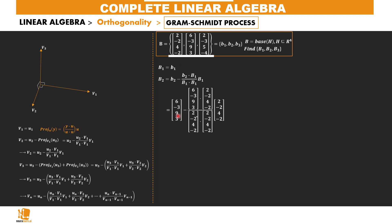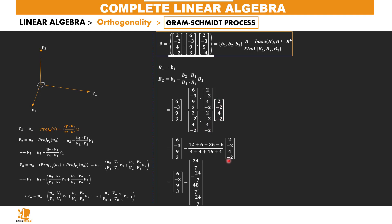Applying this, we have B2 (this vector) minus B2 dot B1 divided by B1 dot B1 times B1. Solving this, we obtain: numerator is negative 6 times 2 = 12, plus 6, plus 36, minus 6; denominator is 4 plus 4 plus 16 plus 4. Subtracting the resulting vectors, we arrive at our final B2.